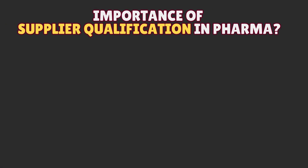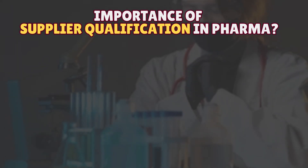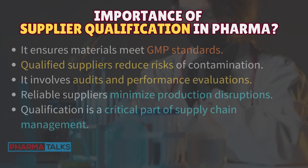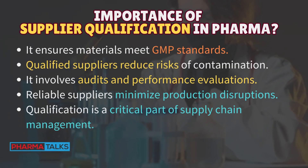Importance of supplier qualification in pharma: It ensures materials meet GMP standards. Qualified suppliers reduce risks of contamination. It involves audits and performance evaluations. Reliable suppliers minimize production disruptions. Qualification is a critical part of supply chain management.